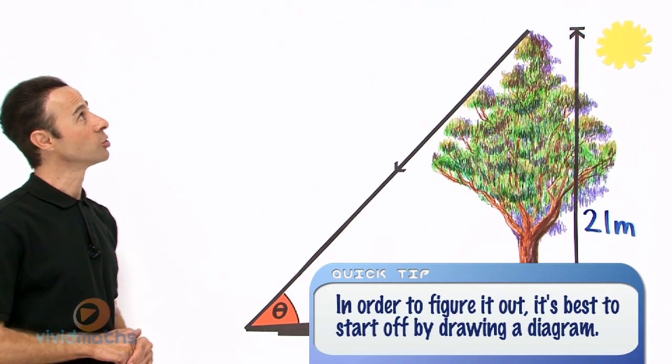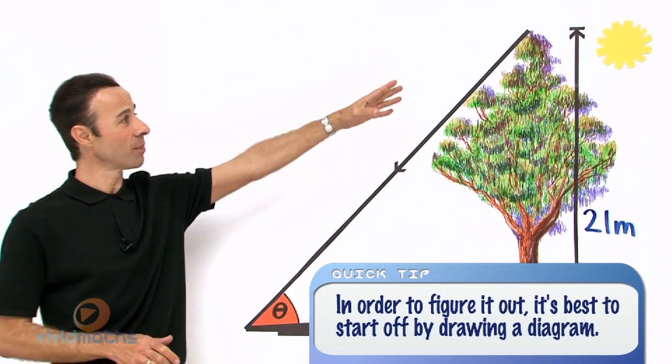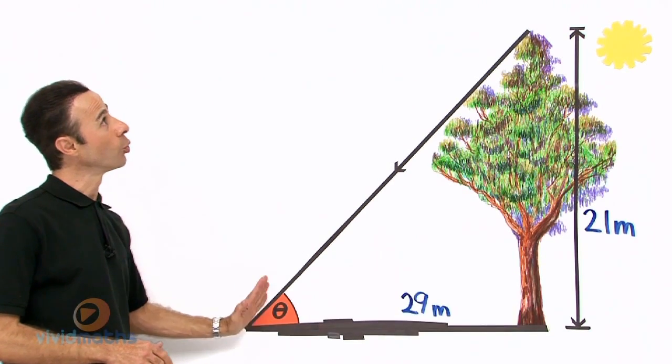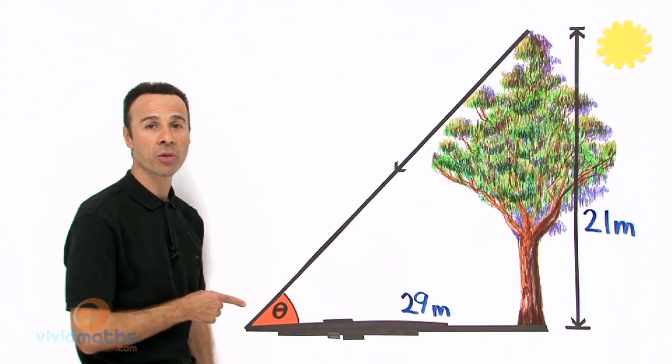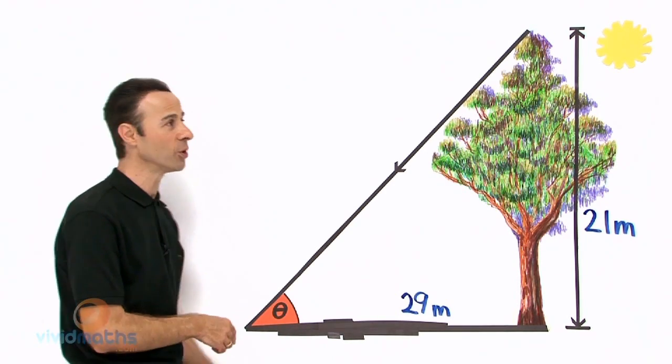What angle do the sun's rays, there is the sun coming down here, make with the ground? So this is the angle of the pronumeral theta. That is what we are looking for.